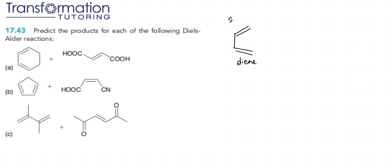We also have to note that the diene must be in S-cis configuration, where the two double bonds are basically on the same side facing each other. If it is not in S-cis configuration, you must rotate it until it is. If you cannot rotate it, then your Diels-Alder reaction will not happen.